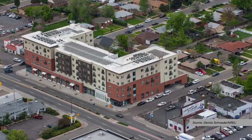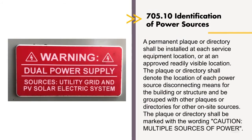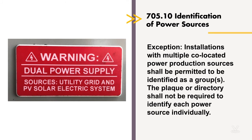705 covers everything else. If you have multiple power systems on a building and they're not connected at the same location, you've got to follow the rules of 705.10. This says that we have to have a plaque at each one of the connection points that says 'Caution, multiple sources of power.' The service is going to have this placard on it, showing where all these other sources are connected. However, if everything is co-located at the same place, coming into the same location, we're not required to have a separate plaque. And that's what this exception is talking about.